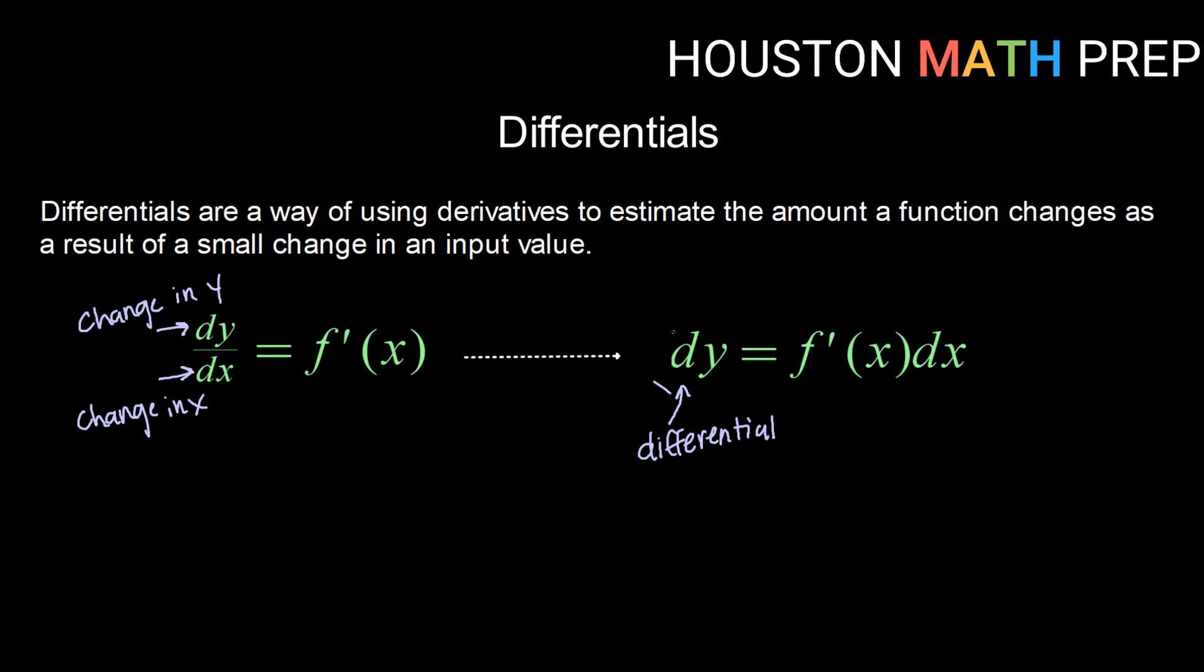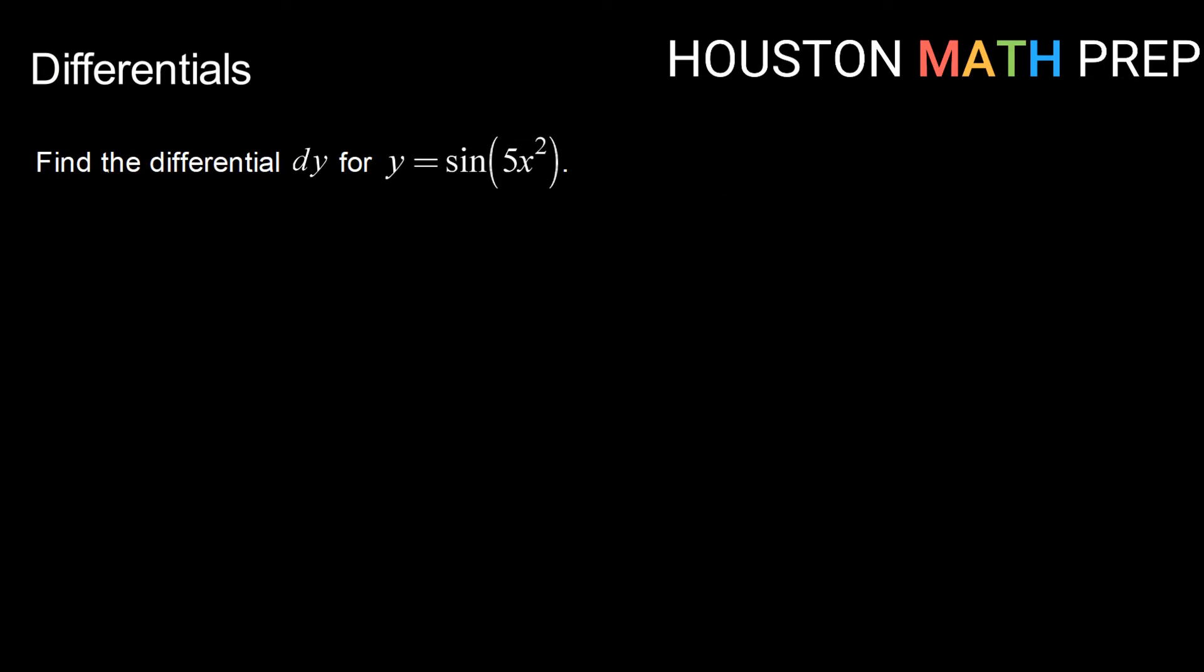So let's take a look at how we might solve for dy. We want to find that differential dy for the function y equals sine of 5x squared. Now remember we just saw that in general dy is equal to f prime of x times dx. So what we want to do is take our derivative dy/dx using normal derivative rules and then multiply over our dx.